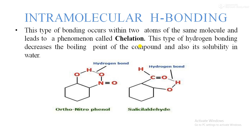This type of hydrogen bonding decreases the boiling point of the compound and also its solubility in water. Because the hydrogen bonding is within the molecules, the solubility decreases. Similarly, salicylaldehyde has a C double-bonded H group with hydrogen bonding within the same molecule. This type of hydrogen bonding is called intramolecular hydrogen bonding, which decreases the melting and boiling point and also decreases the solubility in water.